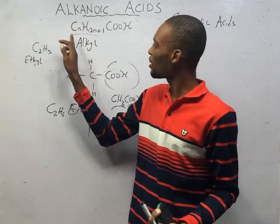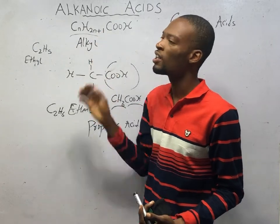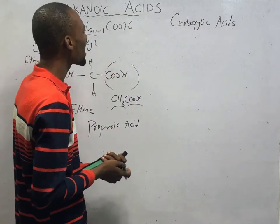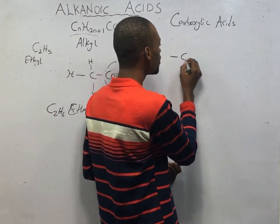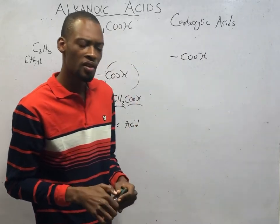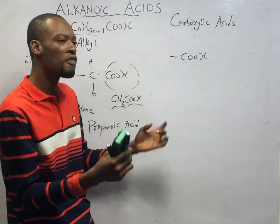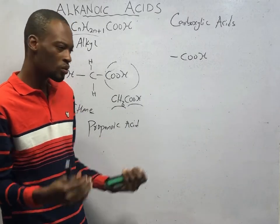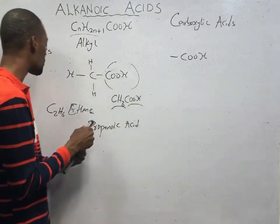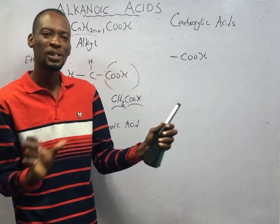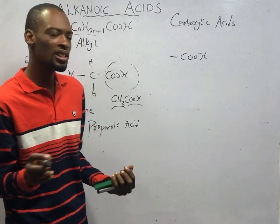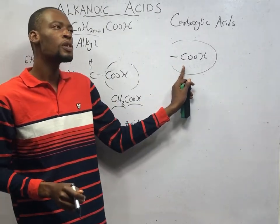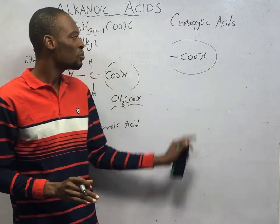For example, if n = 3, then CₙH₂ₙ₊₁ = C₃H₇, and you add COOH. The functional group of alkanoic acids or carboxylic acids is simply COOH. Remember, a homologous series is a family of organic compounds which follow a regular structural pattern, with each member differing by a CH₂ group. The functional group is an atom, ion, or molecule common to a homologous series. Any homologous series having COOH is a carboxylic acid or alkanoic acid.